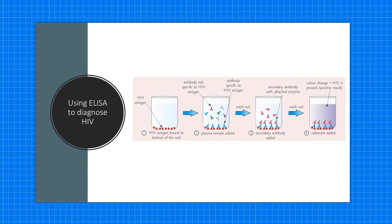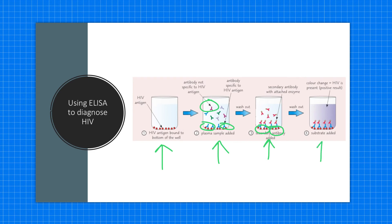Here's a useful diagram. You can see in the well — the bottom of one of the wells — that HIV antigen is bound to the bottom. Then the sample is added, and the antibody specific to the HIV antigen binds, whereas others won't bind. You wash the well, then add a secondary antibody with the attached enzyme, which attaches to the antigen — so the enzyme is now bound. You wash it out again, add the substrate, and there is a colour change. If there's a colour change, that shows a positive result — in this case, for HIV.